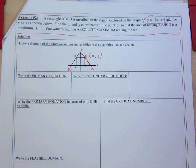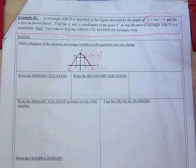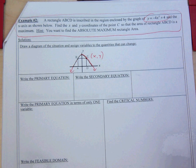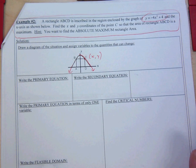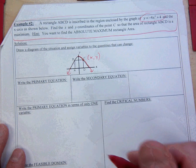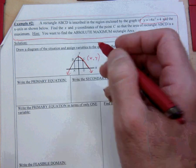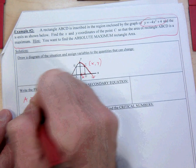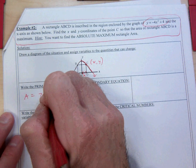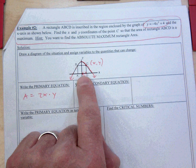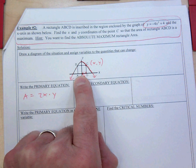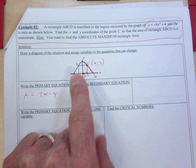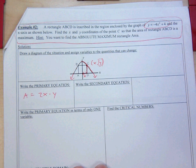We want to find the absolute maximum area. The primary equation: since x is the distance from the y-axis to point D, the full length of the rectangle is 2x, and the height is the y-coordinate at that point. So the primary equation is A = 2x · y, same as before.